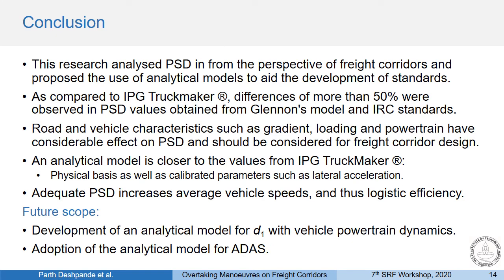Concluding: we presented the analysis of existing PSD models particularly for freight corridors and proposed an analytical model which could aid the development of reasonable standards. Comparing existing models with IPG Truckmaker across different road and vehicle scenarios revealed huge differences. The analytical model gave closer values to IPG Truckmaker and has the advantage of a physical basis with few calibratable parameters. Providing sufficient PSD can reduce congestion and increase safety as well as logistic efficiency, making it very important in designing freight corridors.